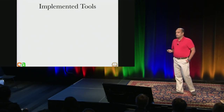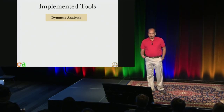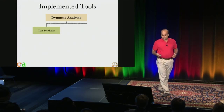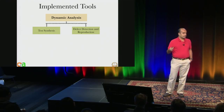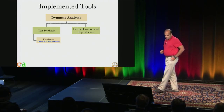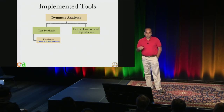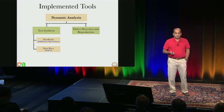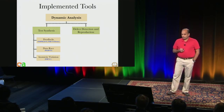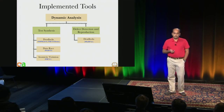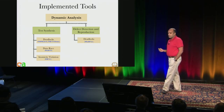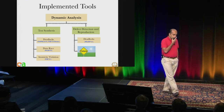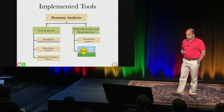We have implemented tools for this. The dynamic analysis engine is split into two phases: test synthesis and defect detection and reproduction. We have tools for synthesizing tests to expose deadlocks, data races, and atomicity violations. We also have a tool for detecting and reproducing deadlocks, and we are actively working on tools for atomicity violations and races as well.